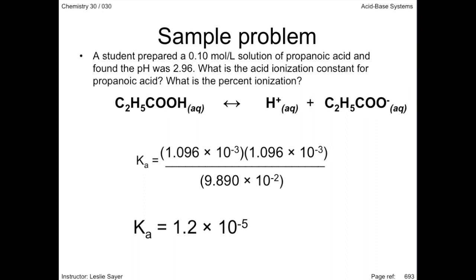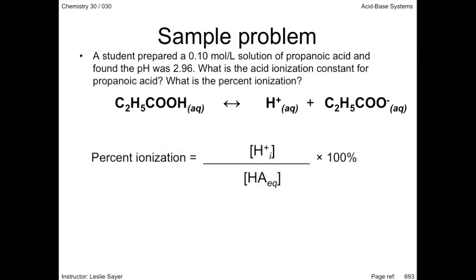Now let's determine the percent ionization. In other words, what percent of the acid is ionized to form the equilibrium products? A general equation you should remember to calculate percent ionization is hydrogen ion concentration at equilibrium divided by the acid's initial concentration times 100.